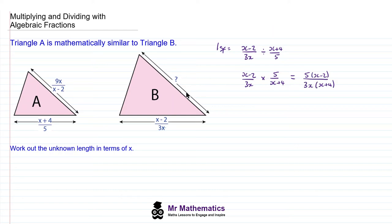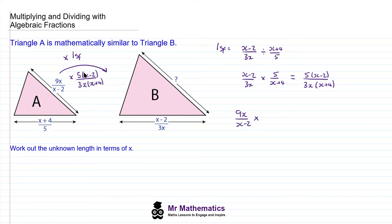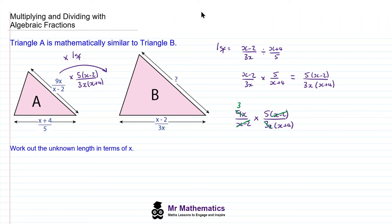The length scale factor means this length in triangle B is that much bigger than the corresponding length in triangle A. To work out the unknown length, we multiply the corresponding length 9x over x minus 2 by the scale factor 5 lots of x minus 2 over 3x times x plus 4. Now we cross-simplify: 9x and 3x both divide by 3x, leaving 3 in the numerator, and x minus 2 on the denominator cancels with the numerator. So finally we have 3 lots of 5, which is 15, over x plus 4. Thanks very much for watching, and I hope you found that useful.